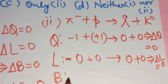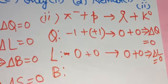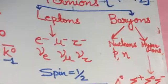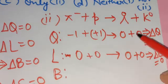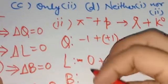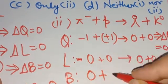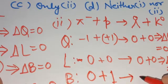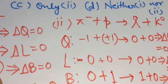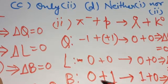Now let's check the baryon number. Pi negative is a meson, so its baryon number is 0. Proton is a baryon, so its baryon number is +1. Lambda naught is also a baryon, so its baryon number is +1. K naught is a meson, so its baryon number is 0. Total baryon number of reactants is +1 and of products is also +1, so delta B equals 0 — baryon number is conserved.